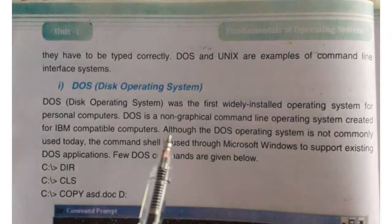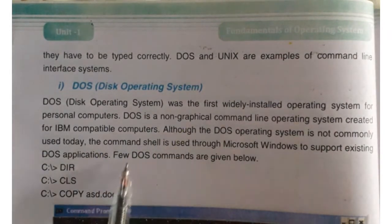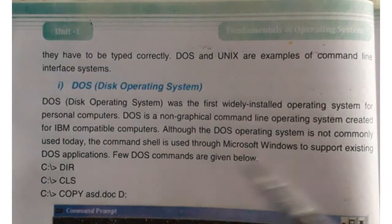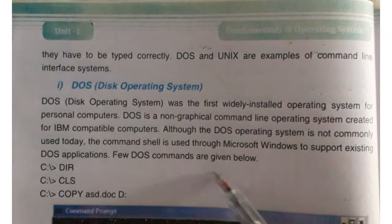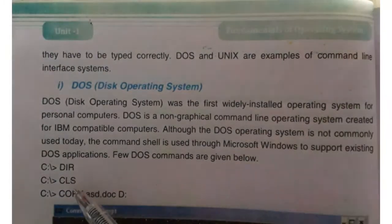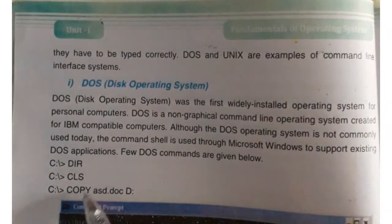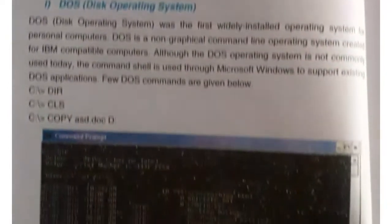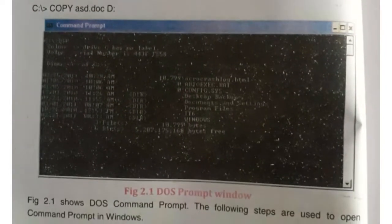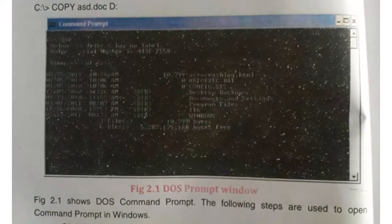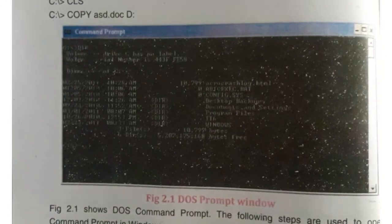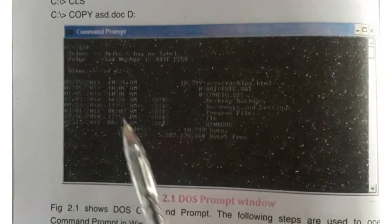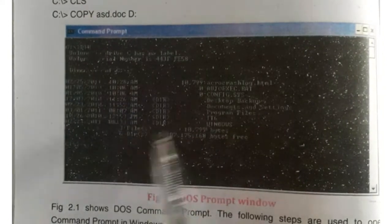DOS was created for the IBM compatible computer. Although the DOS operating system is not commonly used today, a few DOS commands include DIR, CLS, COPY, and CD. These are commands which must be remembered by the user to communicate with the computer. In the DOS interface, a black screen is given and the user has to type commands, knowing the meaning and working of each command.